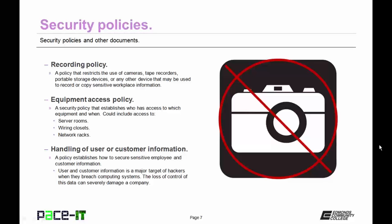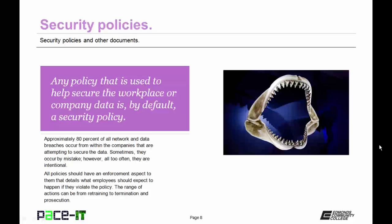There are security policies that deal with the handling of user or customer information. They're used to establish how to secure sensitive employee and customer information. User and customer information is a major target of hackers when they breach computing systems, and the loss of control of this data can severely damage a company. Any policy that is used to help secure the workplace or company data is, by default, a security policy. Approximately 80% of all network and data breaches occur from within the companies that are attempting to secure the data — sometimes by mistake, but all too often they are intentional. All policies should have an enforcement aspect to them that details what employees should expect to happen if they violate the policy. The range of actions can be from retraining to termination and prosecution.